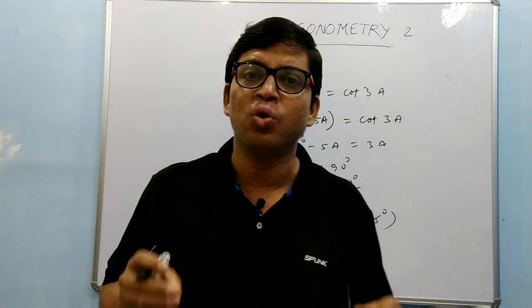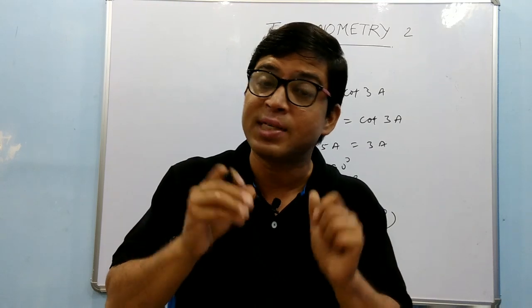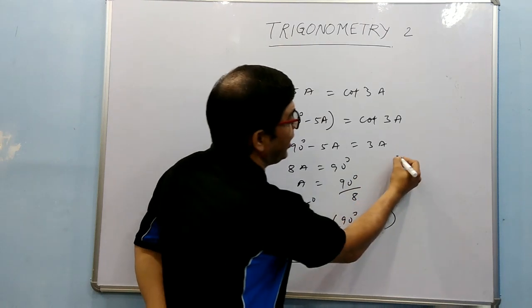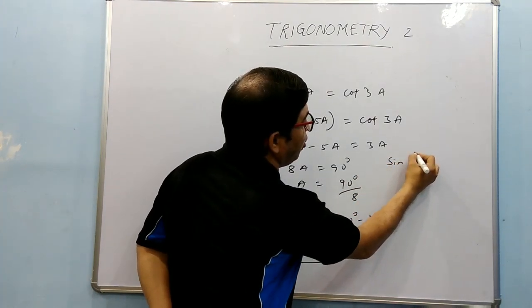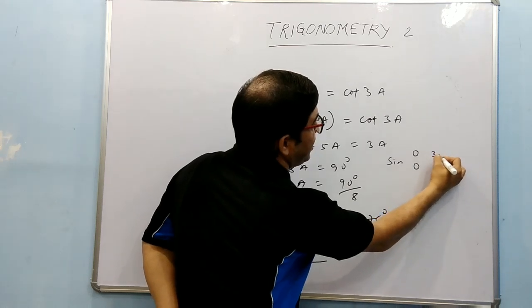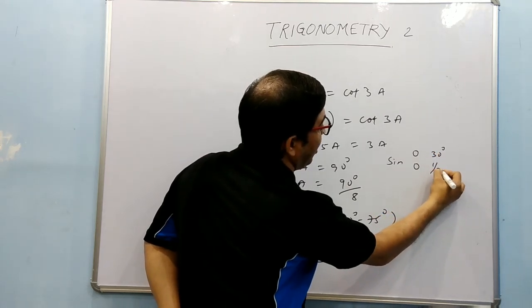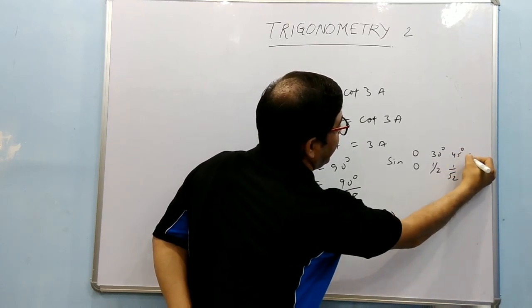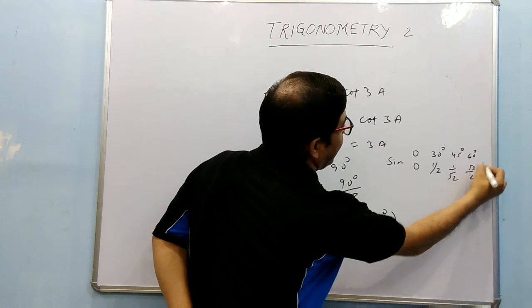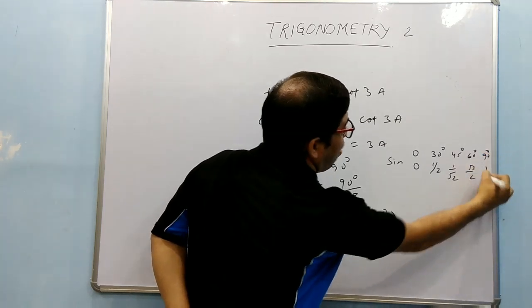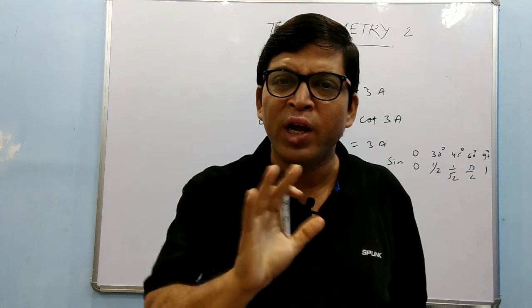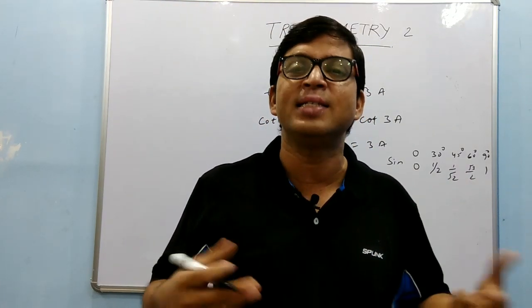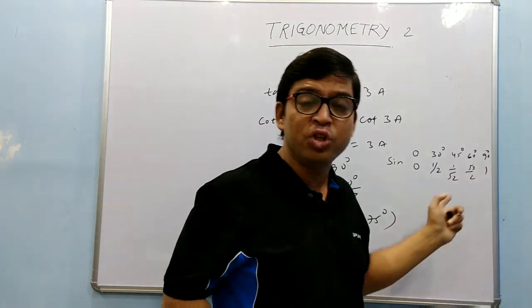Apart from that, you must know the values of some standard angles. You might be knowing it, just for sake of revision I'm writing. sin 0° = 0, sin 30° = 1/2, sin 45° = 1/√2, sin 60° = √3/2, and sin 90° = 1. Very simple, no need to go for some technical calculation. Just remember very simple. It is moving from 0 to 1: 0, 1/2, 1/√2, √3/2, and 1.